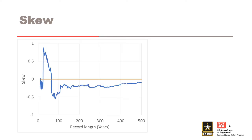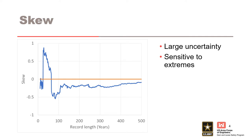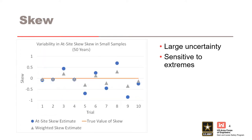Parameters are typically estimated from the at-site flow data. Because discharge gauge records are generally short, there is often a relatively large uncertainty in the at-site skewness coefficient. The skew parameter is sensitive to extreme events and modest record lengths. So to improve this estimate, we can pool data from a region to increase the effective sample size. Doing this reduces sampling error, and we call this trading space for time.